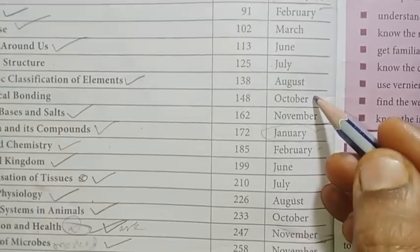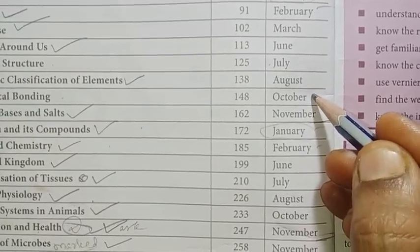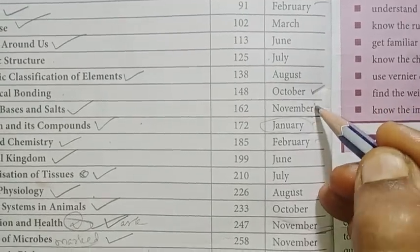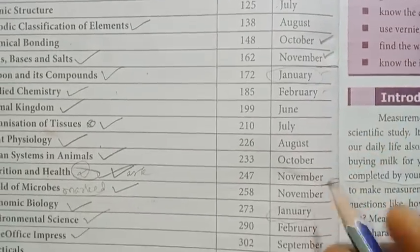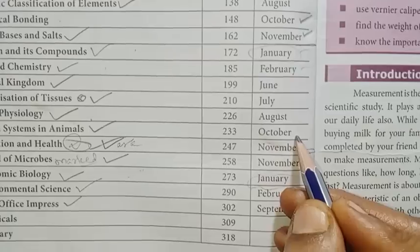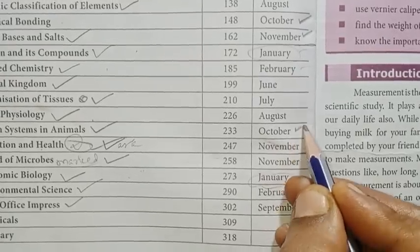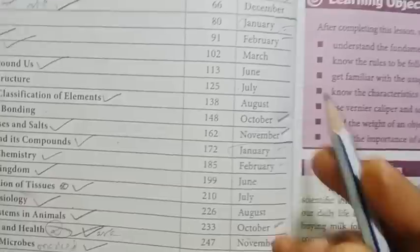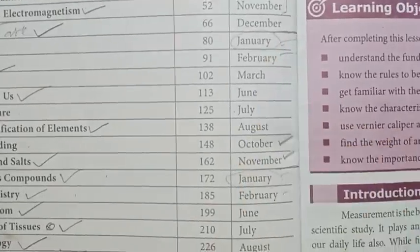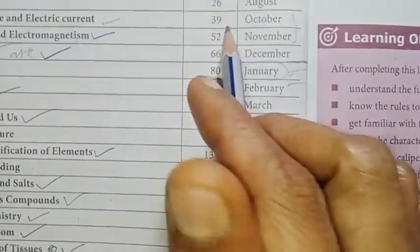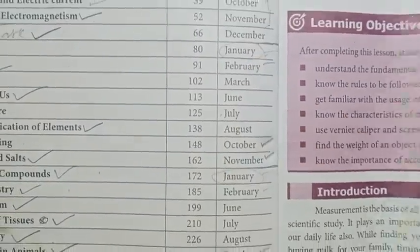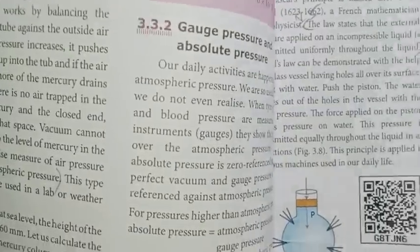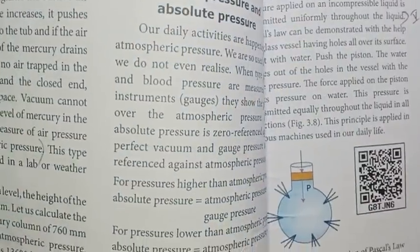Chemistry units 13 and 14. Biology units 20, 21, and 22. Page number 39. So, in science, how do we prepare?